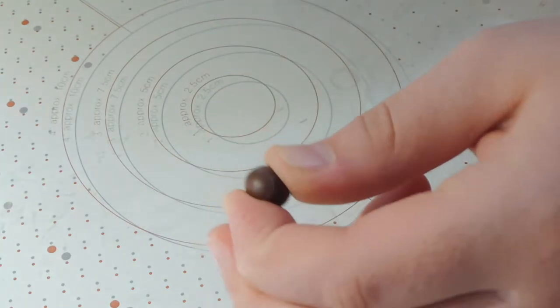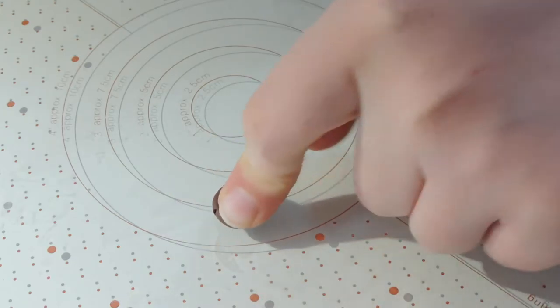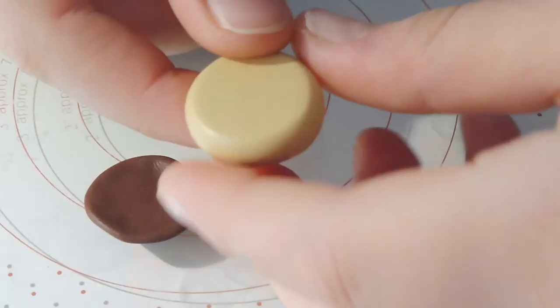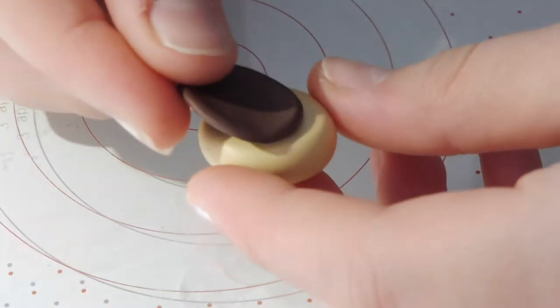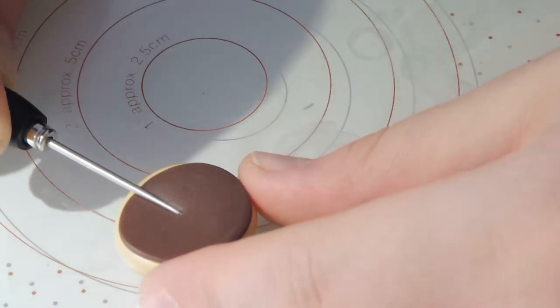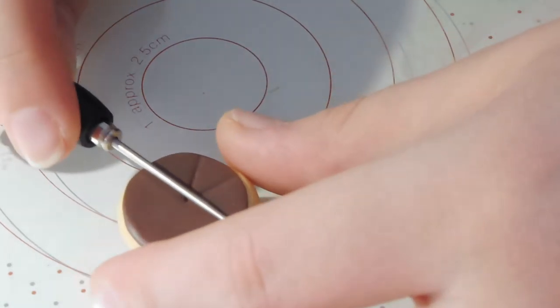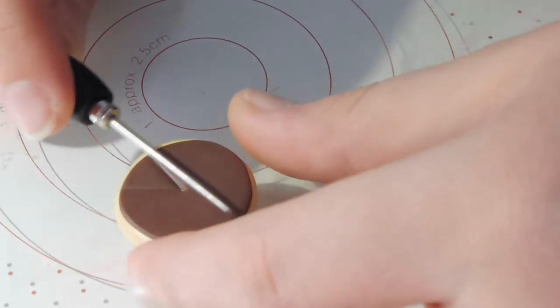Now taking our brown, we're just basically going to flatten it into a very flat disc. And we're going to attach this to the base of our mushroom head. I'm just pushing down using a needle tool here and just creating a bit of texture as well. So this helps attach as well as to make it look pretty cute.